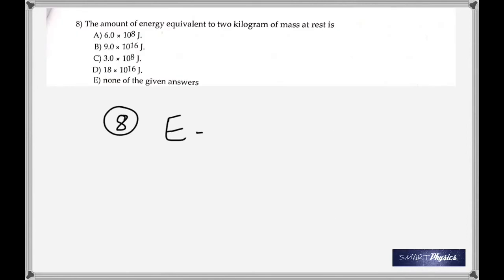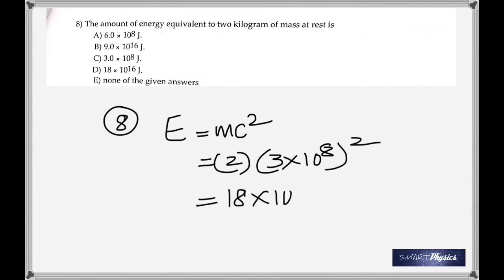Number 8, the amount of energy which is equivalent to 2 kilogram of mass, direct application. E is equal to mc squared. Just put it into that. And obviously, it's 18 times 10 to the 16 joules, just from 2 kilograms.